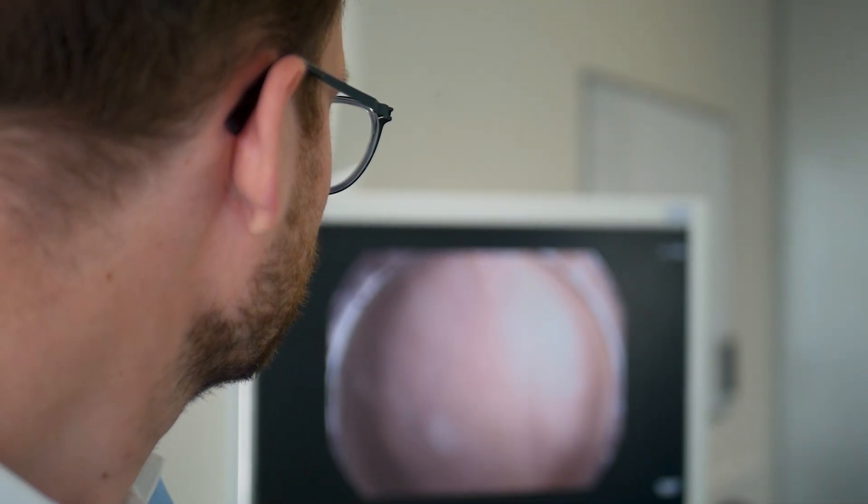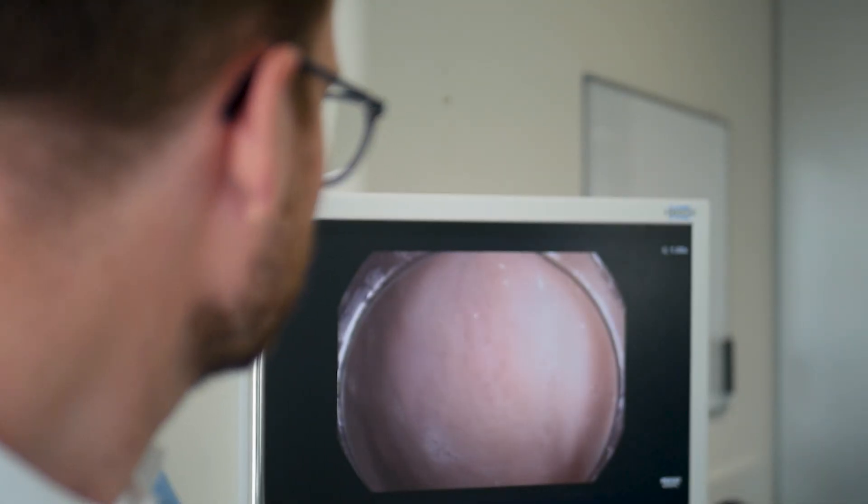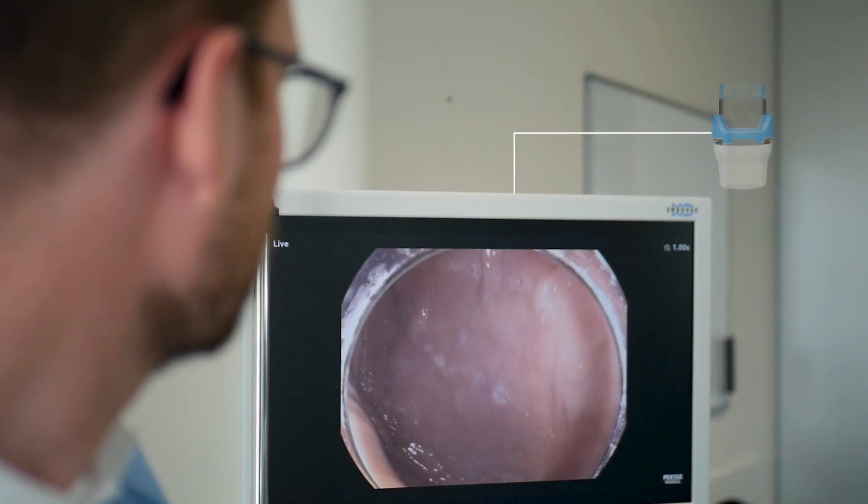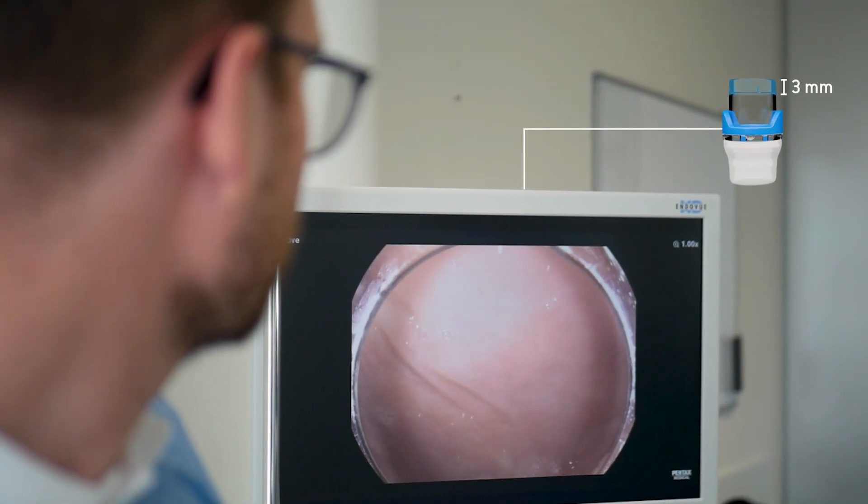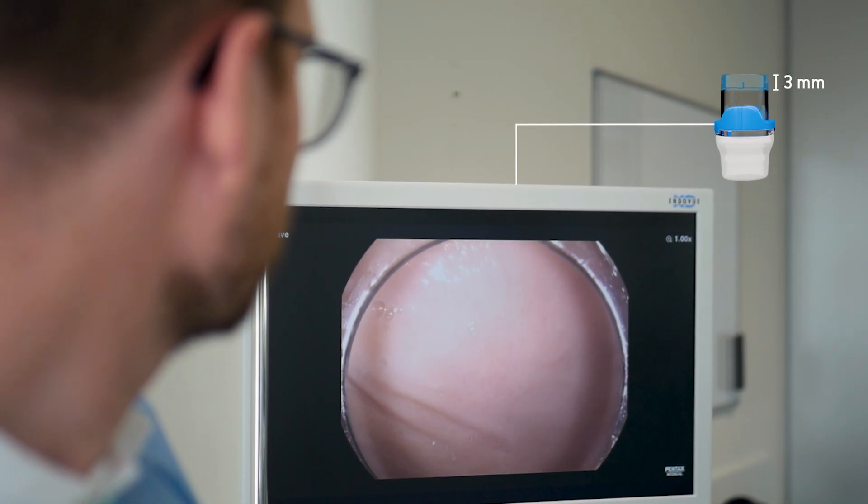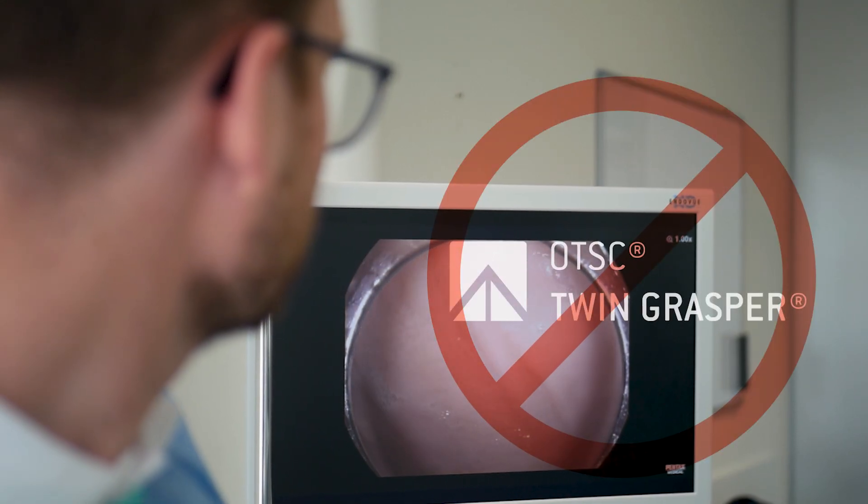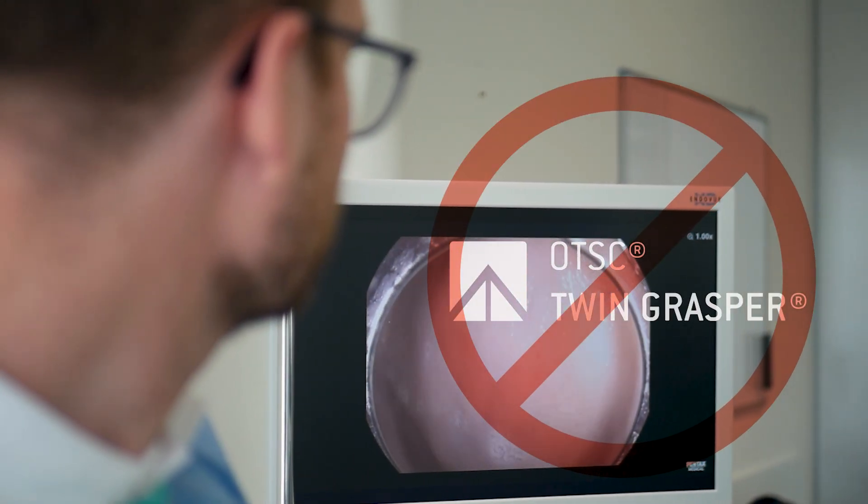Therefore, for cases where even better visualization and easier navigation in narrow lumens as well as further limitation of the tissue amount are desired, a variant with a cap depth of 3 mm is also available. However, this variant is not compatible with the OTSC Twin Grasper.